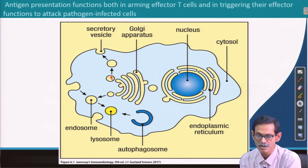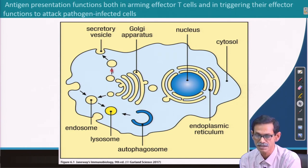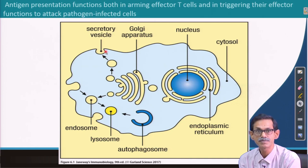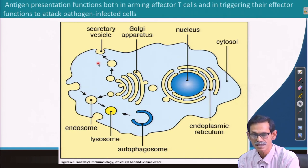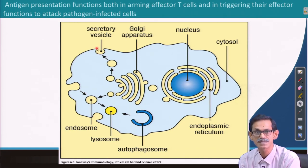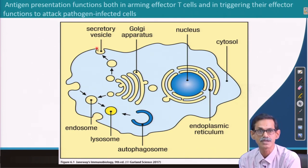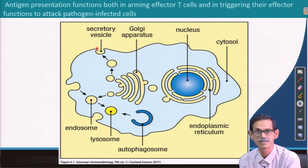From Golgi, proteins go to the trans-Golgi network, and then secretory vesicles are formed. If the protein is membrane-bound, it stays in the membrane; if it is secretory, it leaves the cell and enters the surrounding fluid inside the body.